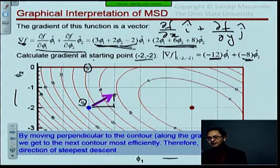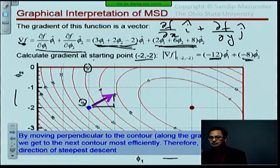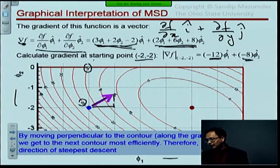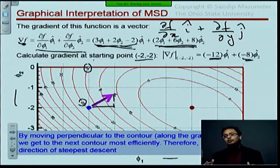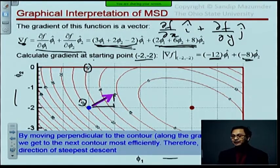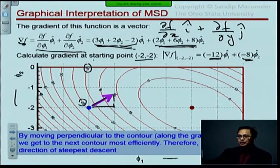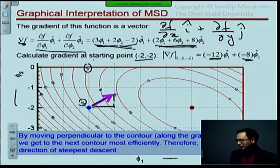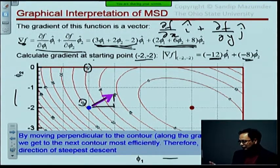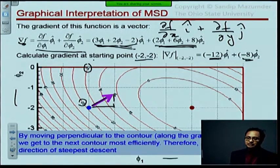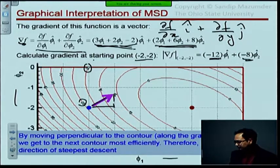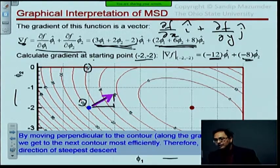Now of course, from a calculus standpoint this is all infinitesimal change. By next contour I mean the contour that's infinitesimally away from 25, not necessarily 20. But geometrically if you wanted to draw it that's the interpretation. That is why this is known as the method of steepest descent because you're following the gradient and the gradient takes you to the next level the quickest.